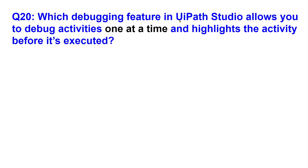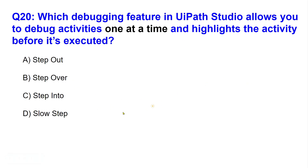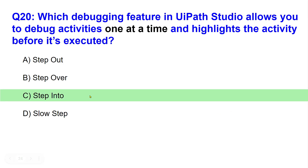Which debugging feature in UiPath Studio allows you to debug activities one at a time and highlights the activity before it's executed? Options: Step Out, Step Over, Step Into, Slow Step. The right answer is Step Into.